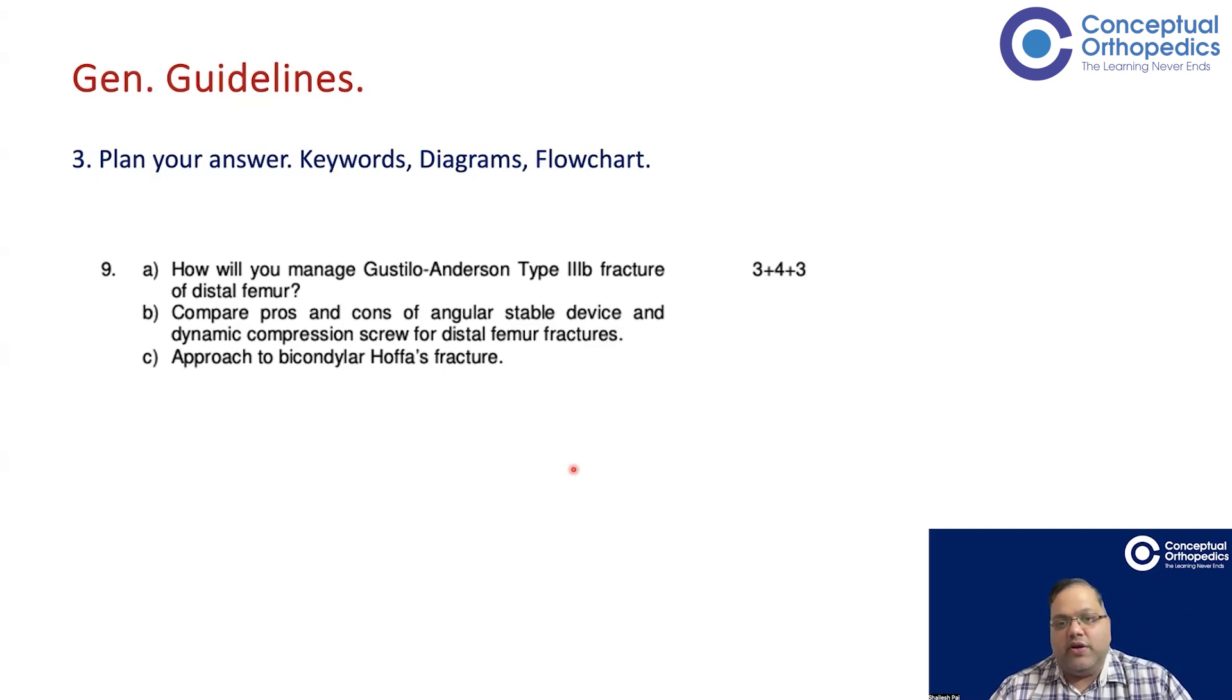Compare pros and cons of angular stable device and dynamic compression screw for distal femur fractures. Now imagine you don't know anything about this. But imagine, this is a very straightforward question, but imagine you don't know. But still, you are just writing pros and cons in a table format, making a little systematic method, you are going to get even one or two marks out of the four marks given. The maximum possible is four.